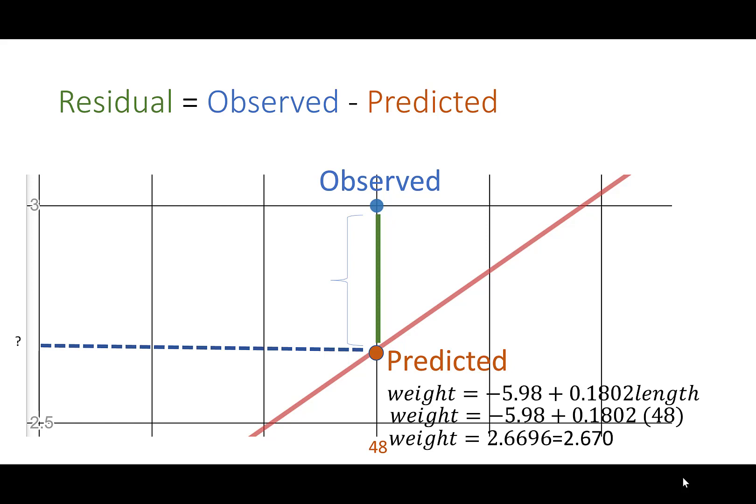That was the predicted value, that little question mark there should be 2.670. To find the residual, I just take the observed value, three, minus the predicted value, 2.670, and I get a residual of 0.33.